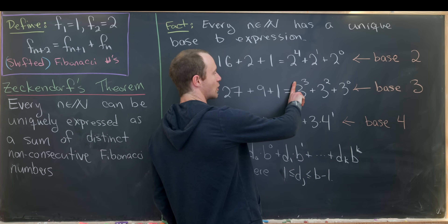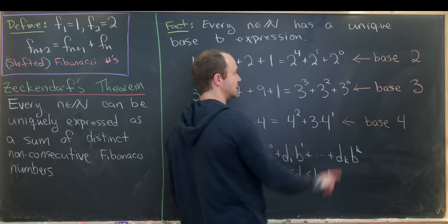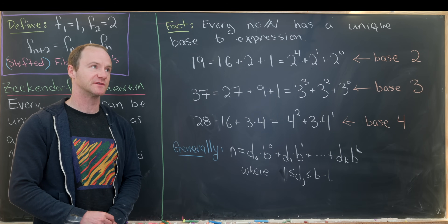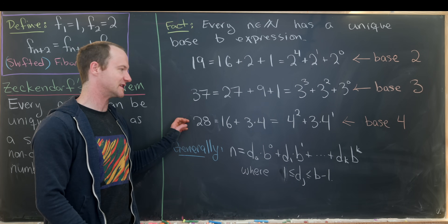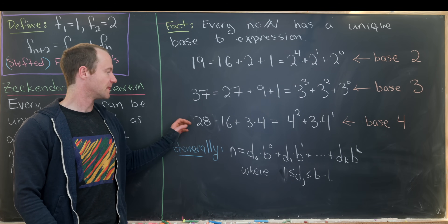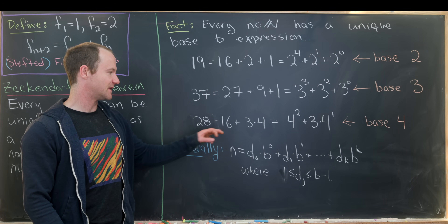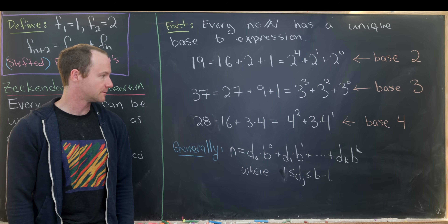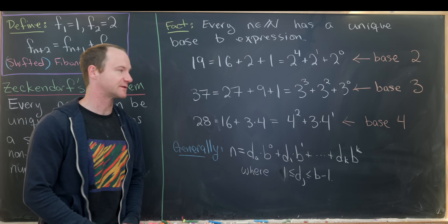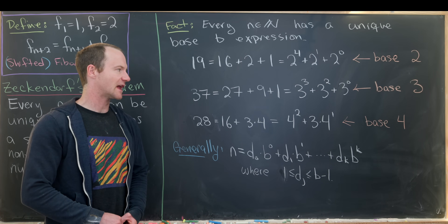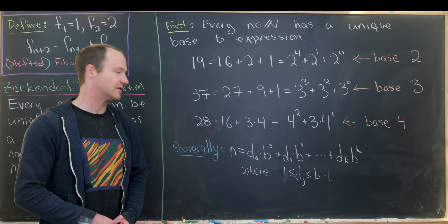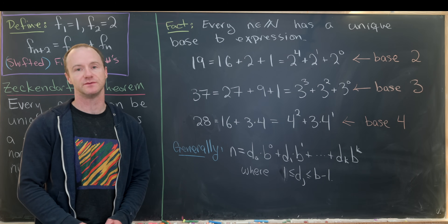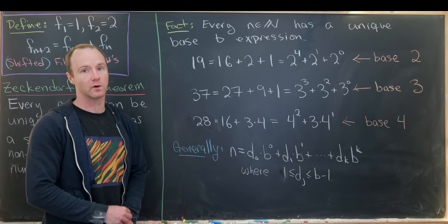Notice we've only got coefficients of 1 for all of these powers of 3, but since we're working in base 3, we could have coefficients of 1 or 2. That's exhibited by the next example: 28 equals 16 plus 12, and since 12 is 3 times 4, that's 4 squared plus 3 times 4 to the 1st — our base-4 expansion of 28, where coefficients are allowed to be 1, 2, or 3.